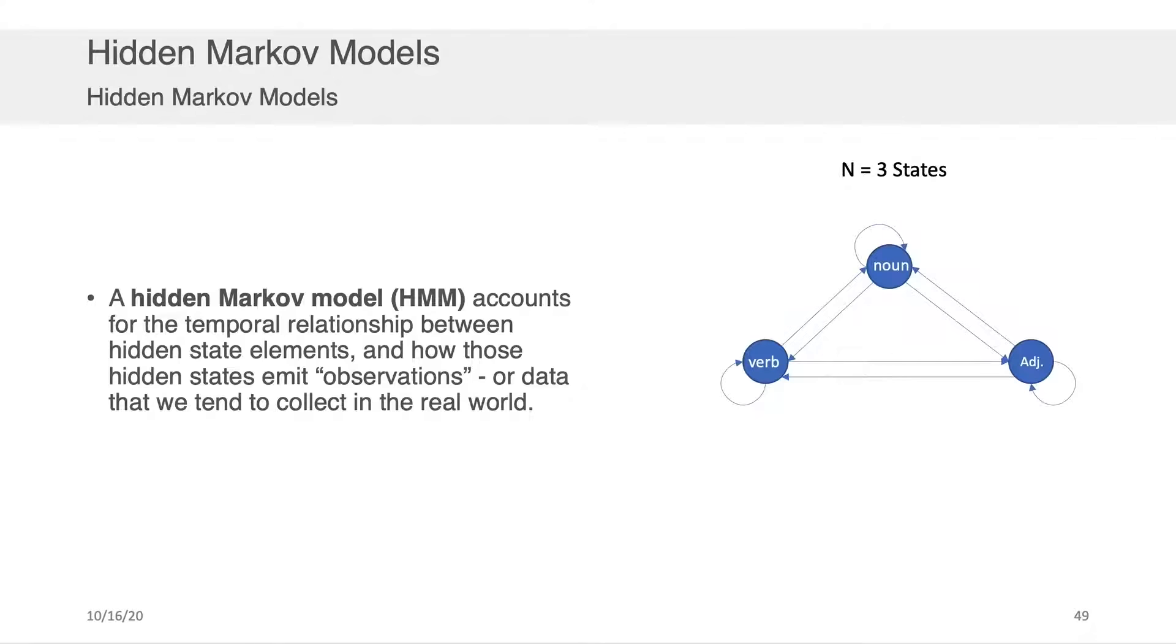Well that's what a hidden Markov model is for. The hidden Markov model is trying to account for the temporal relationships between these hidden states. For instance, if you have a noun, it's probably not very likely to be followed by another noun. It's more likely to be followed, let's say, by a verb. Or an adjective is more likely to be followed by a noun than it is by a verb. So you can see how this transition probability structure would be useful if you wanted to, for instance, run through some text and tag which of the words in the sequence were nouns, which were verbs, and which were adjectives.